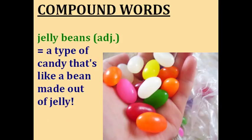Jelly beans. This one's pretty self-explanatory. A type of candy that's like a bean made out of sweet jelly is a jelly bean. You may not have these in your country, but you can see what they look like in the picture.